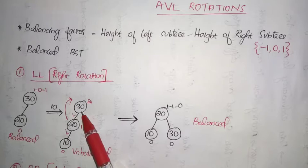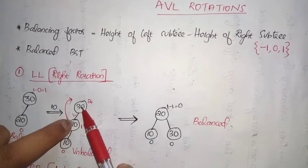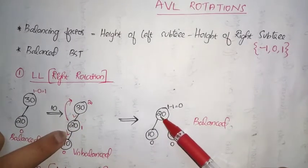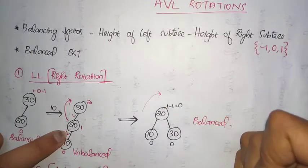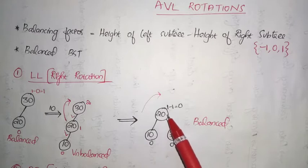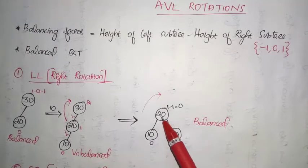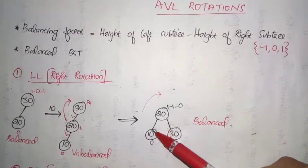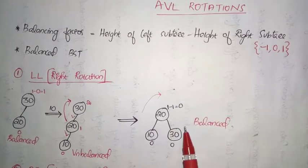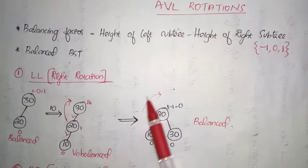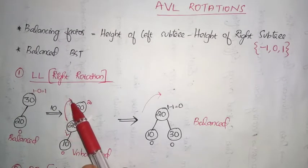After the rotation, 30 comes downward while 20 moves upward and comes in place of 30. Now let's recalculate the balancing factor. The balancing factor of both leaf nodes is 0. The balancing factor of node 20 is height of left subtree 1 minus height of right subtree 1, which is 0. Since all balancing factors are either minus 1, 0, or 1, this tree is balanced. This is how a right rotation is performed in a Left-Left insertion scenario.